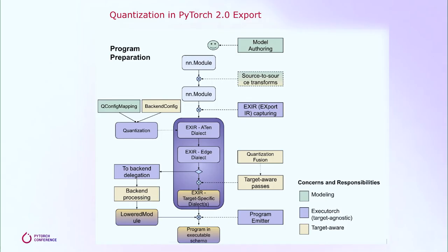Here's a graph that shows the model preparation stage of the PyTorch 2.0 export stack. The eager mode PyTorch model will be captured as a graph with ATen operators. Quantization will take this graph as input and produce a reference quantized model, which represents quantized computation in a backend-agnostic way.